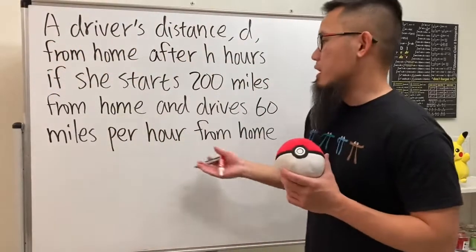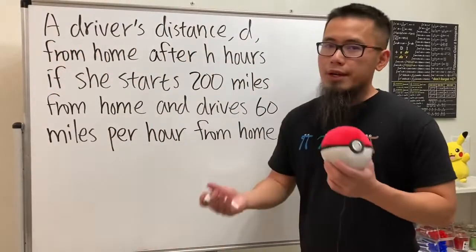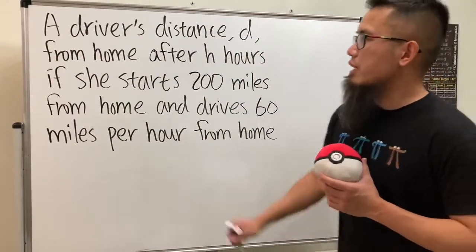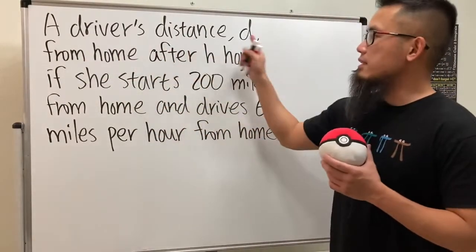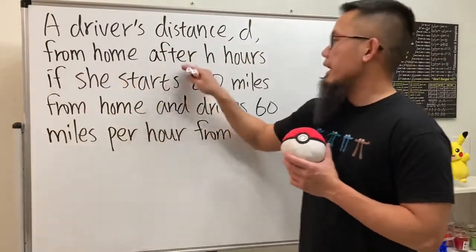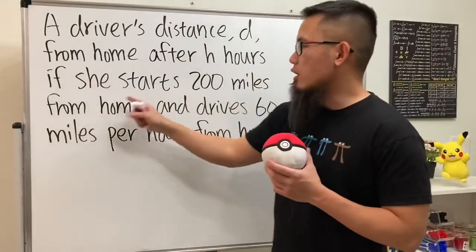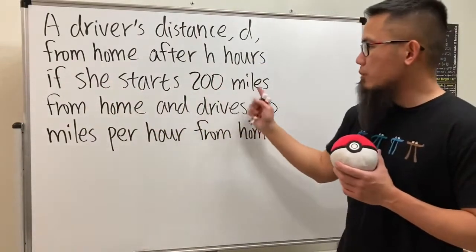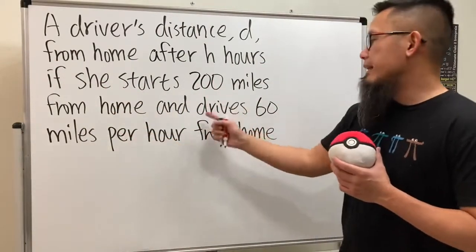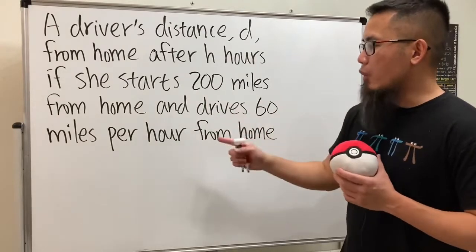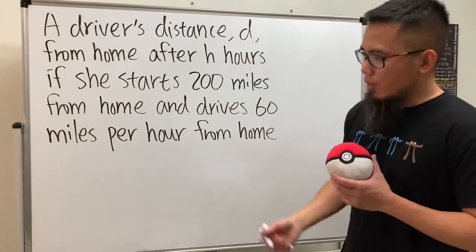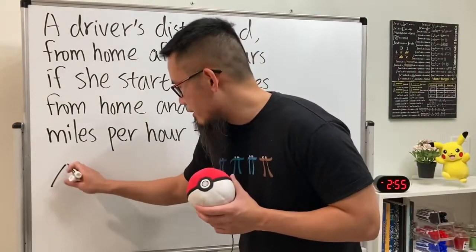Here we are given this scenario and we are going to write a linear equation for this. It says a driver's distance d from home after h hours, if she starts 200 miles from home and she is driving at 60 miles per hour from home.